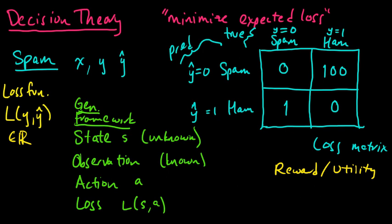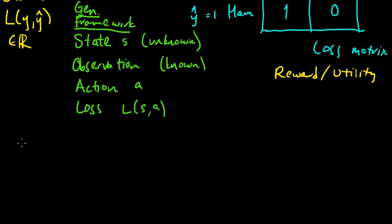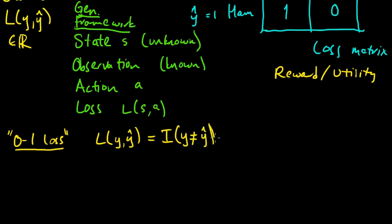This is one little example of a loss matrix, and let me give you a couple commonly occurring examples that turn out to be important for machine learning. So the first one is what's called the zero-one loss. And this is the loss L of y and y hat equal to the indicator function that y is not equal to y hat. So here if you predict the wrong value, if you predict the wrong y hat, then you incur a loss of 1.